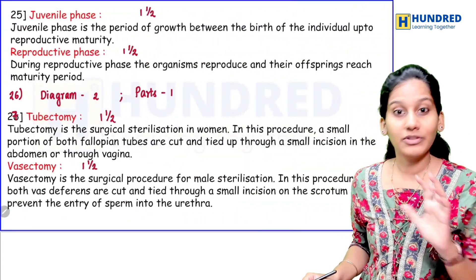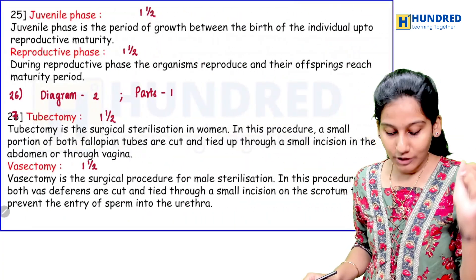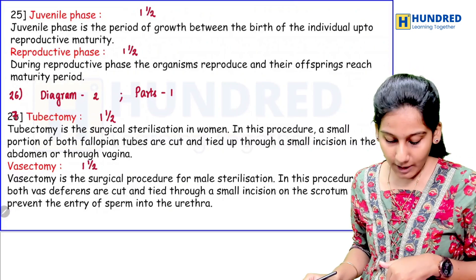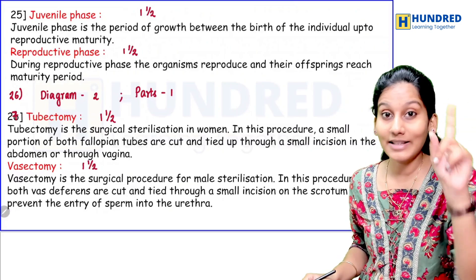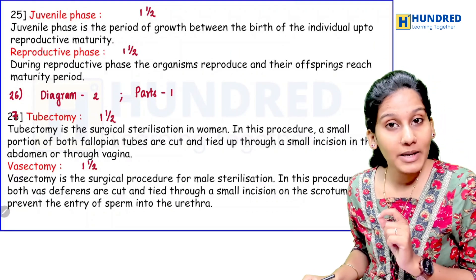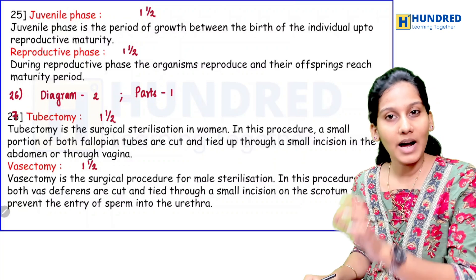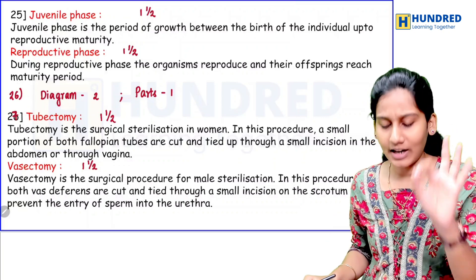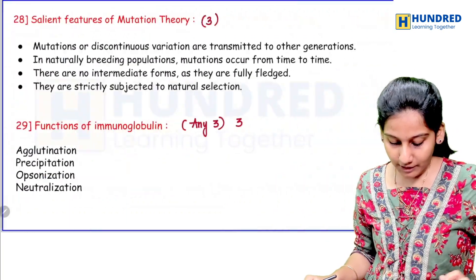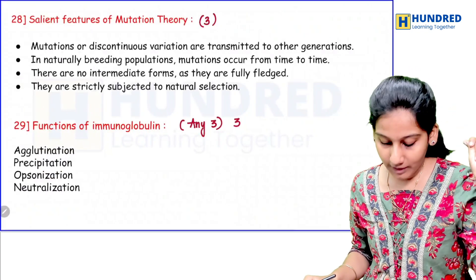Two marks is easier to score. For three marks — journal phase and reproductive phase, from the same first chapter, one and a half marks each. Each line carries one and a half marks. Next, diagram-based questions — if you have a diagram, you will have parts to label, so three marks. Tubectomy and vasectomy: one and a half marks each. If you have mutation theory, you will have four points for three marks.